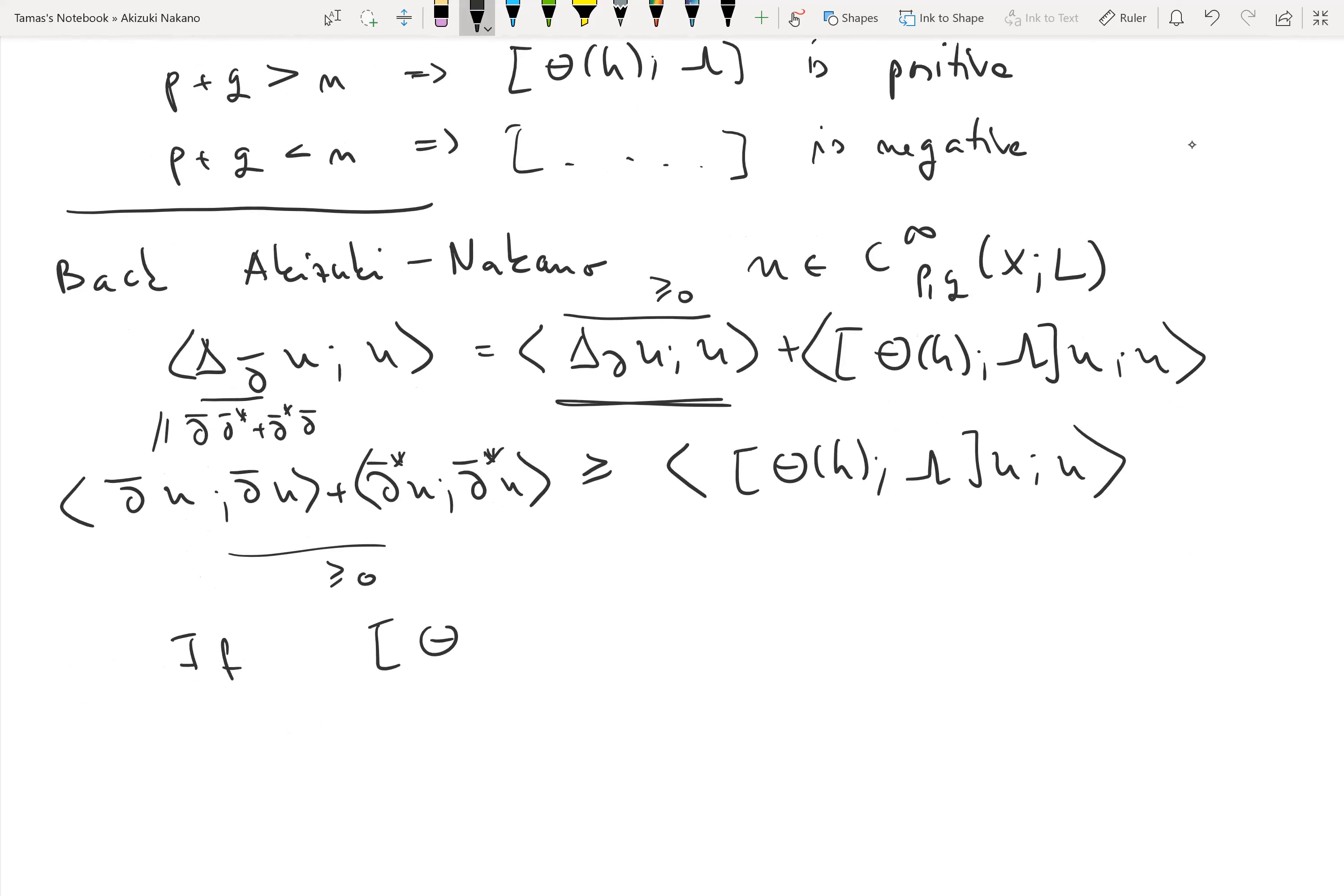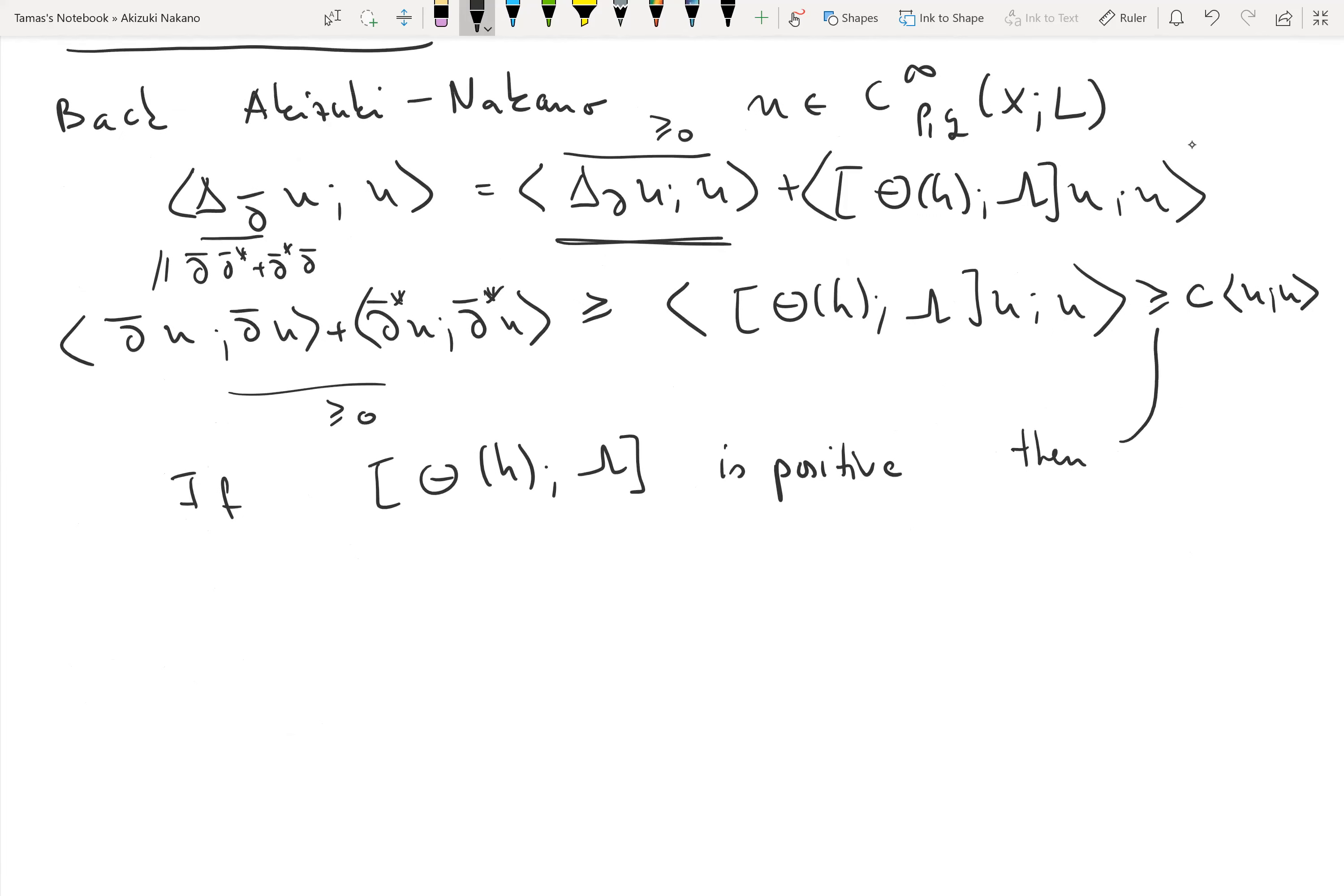In particular, this is always non-negative. I get the same thing here—this is also non-negative. So I can minorize the right-hand side: you can forget about this, so all you're left with is theta_h lambda. If this expression is positive, as we saw in some cases above, then we can say furthermore that this is greater than some c times the norm of u squared.